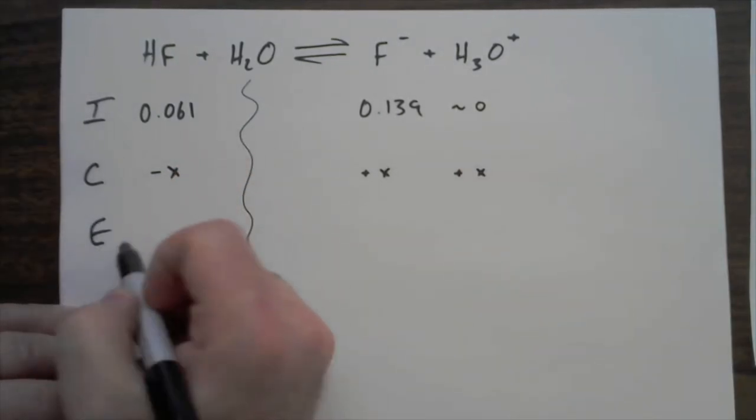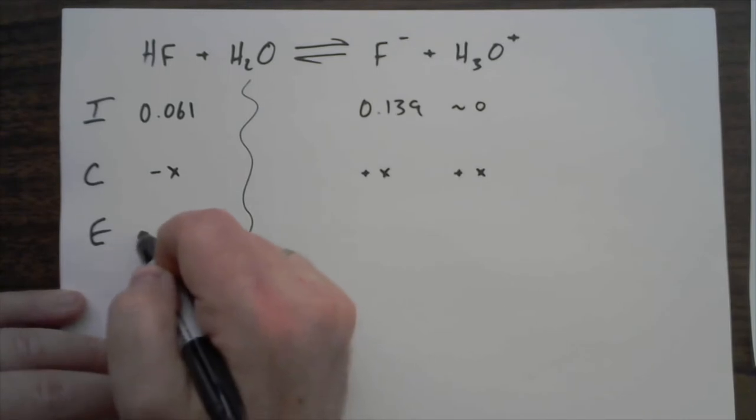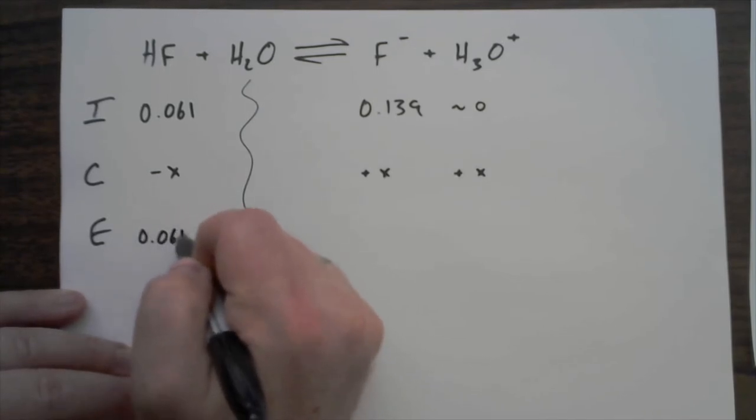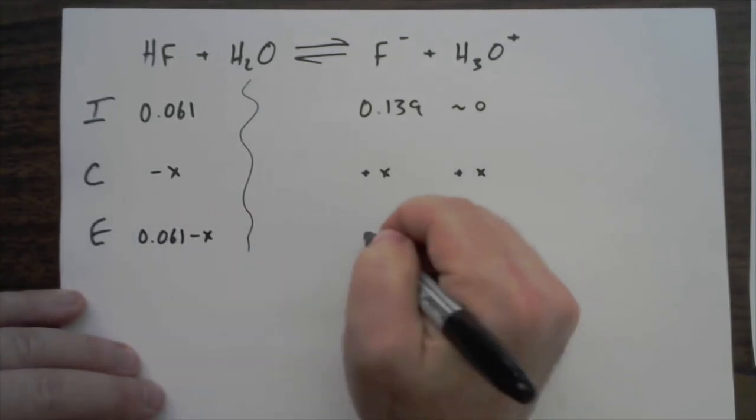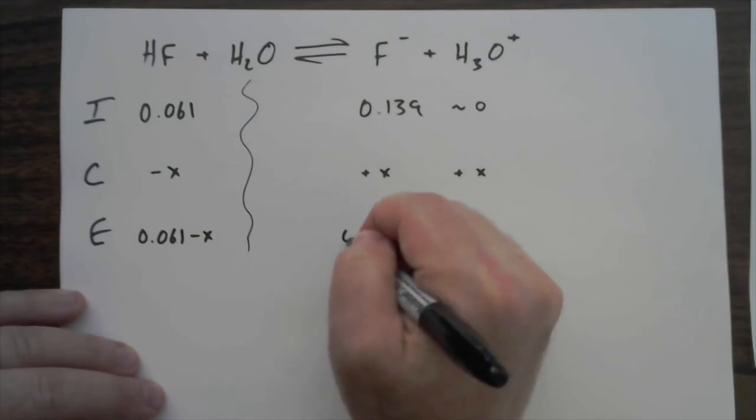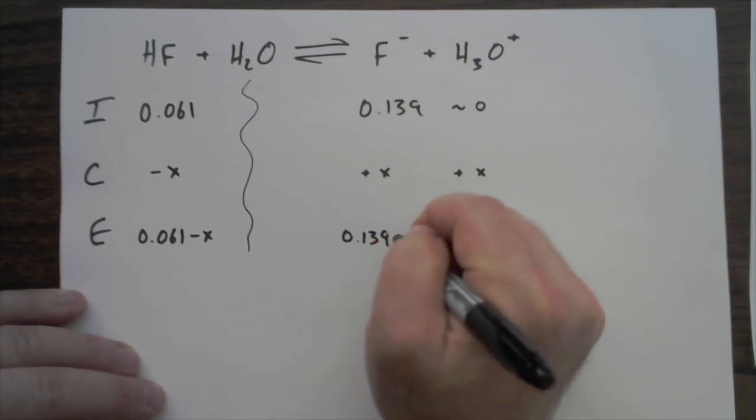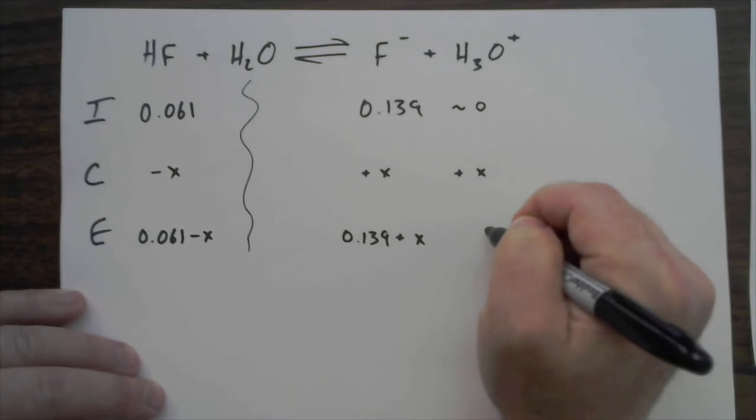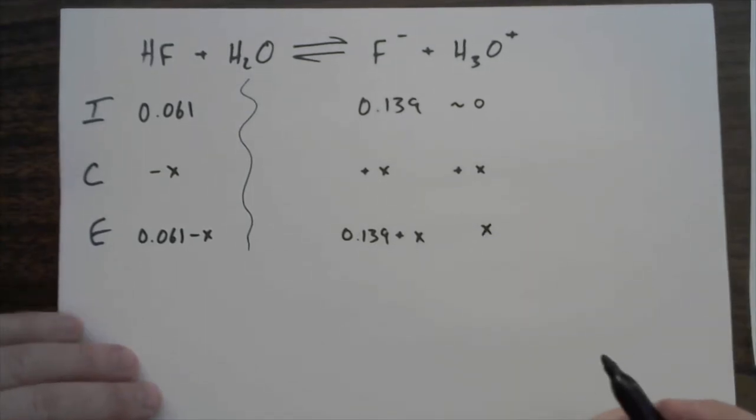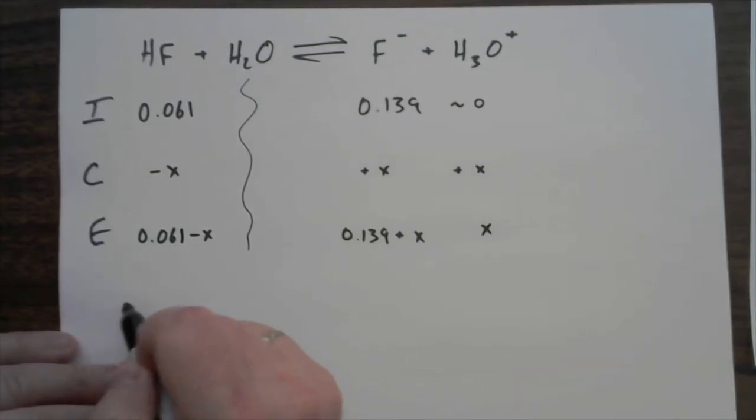Okay, this is equilibrium where it's going to be 0.061 minus x. This is going to be 0.139 plus x, and then this is going to be just an x value over here.